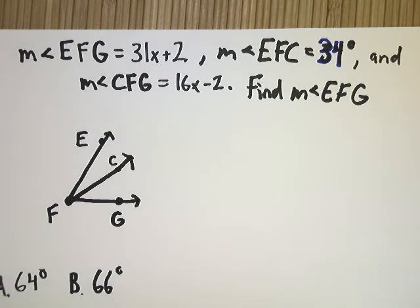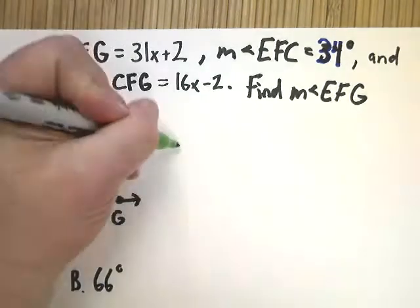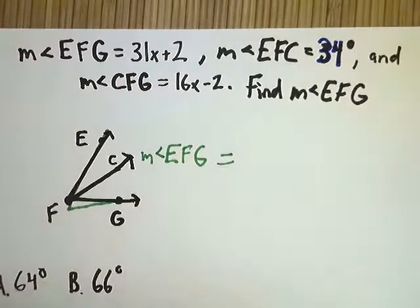Now as I mentioned before, what you want to make sure that you do is match your original setup to the picture. So I can see that EFG is the big angle. So EFG, and I need to set it equal to the two smaller angles.